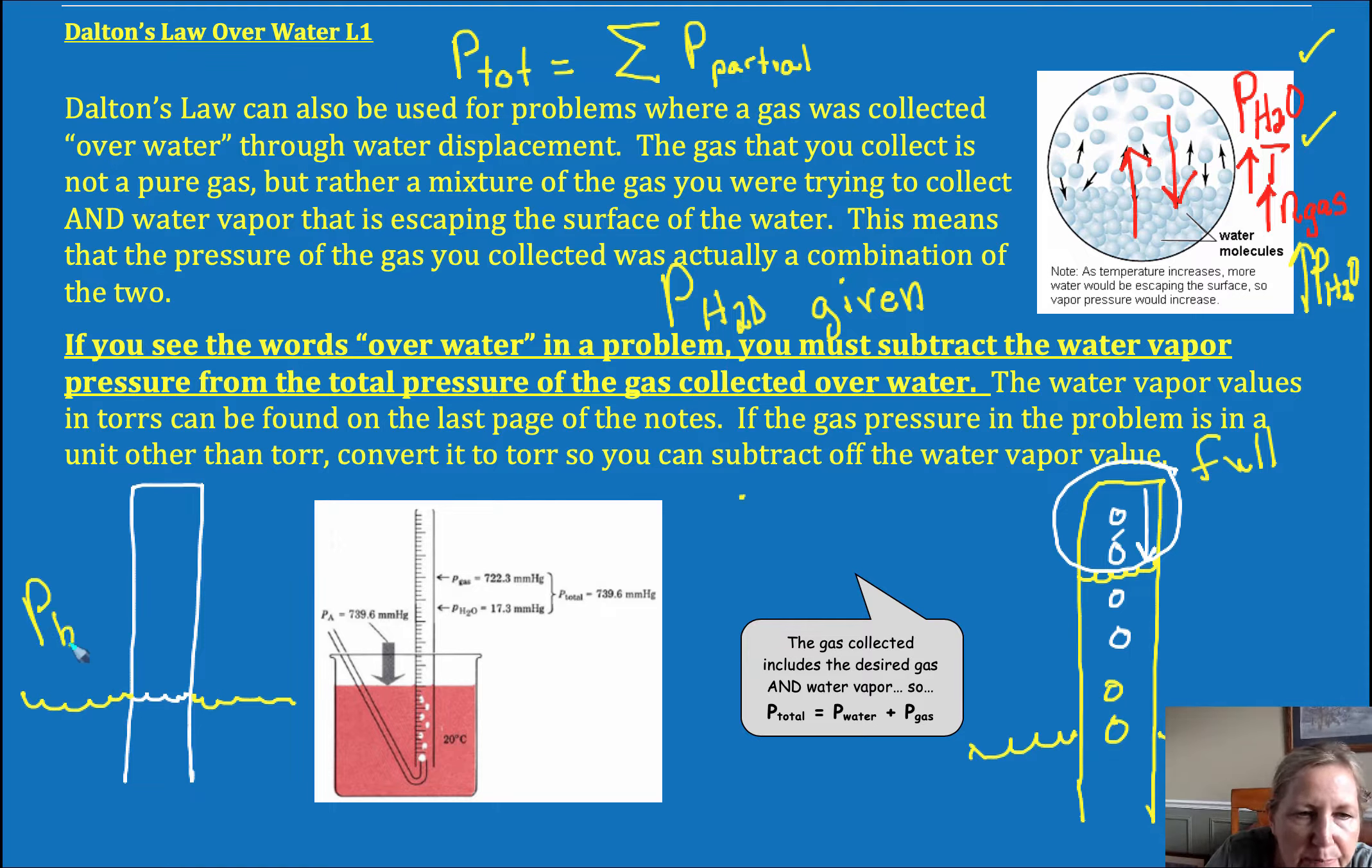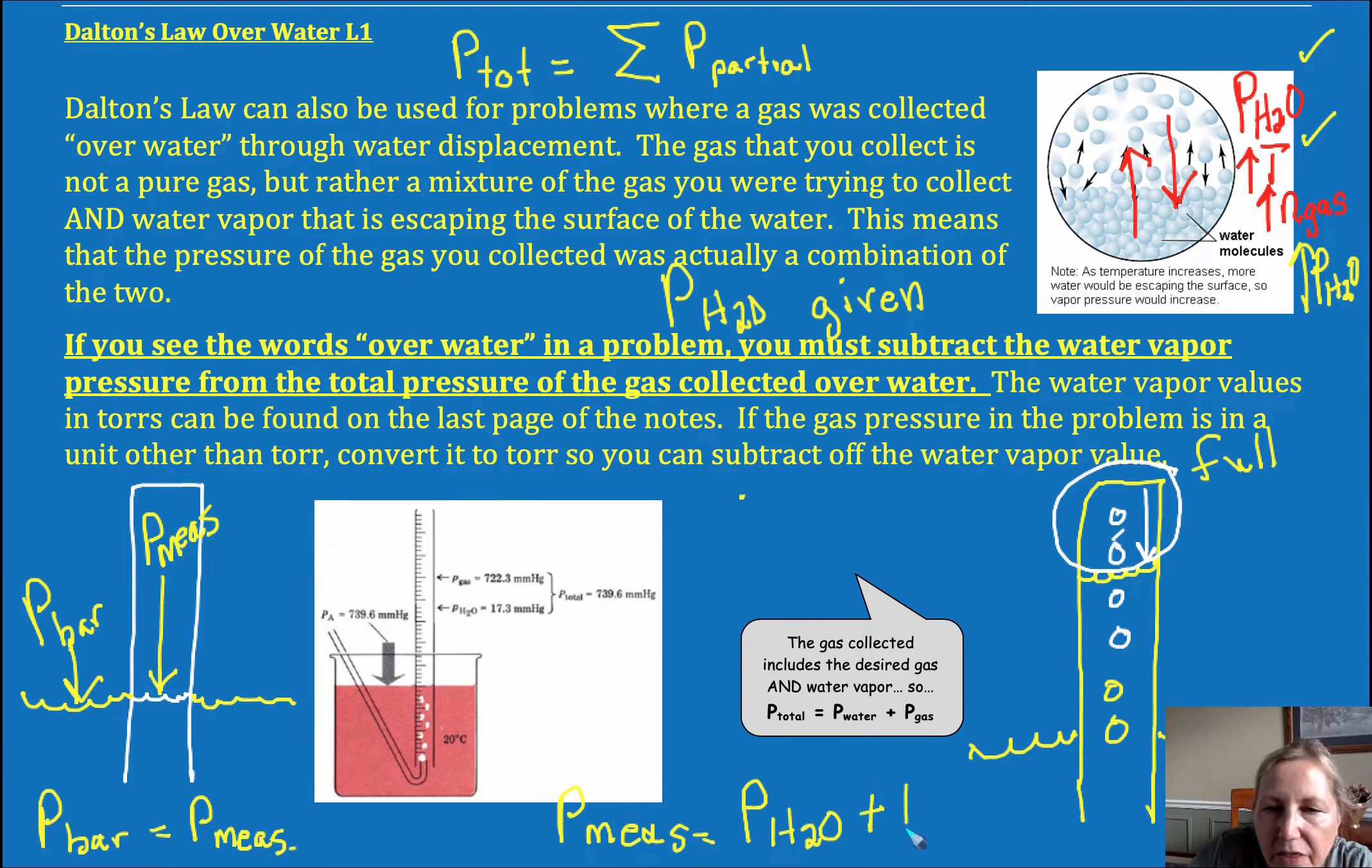So I've got my barometric pressure pushing down. And here I have my measured pressure of gas pushing down. And if those two levels are equal, then my barometric pressure is equal to my measured pressure of my gas that I have collected. And in this case, my measured pressure is going to equal the partial pressure of the water. You're going to have a partial pressure of water up here, plus the partial pressure of my desired gas.